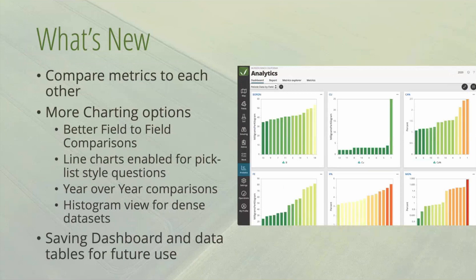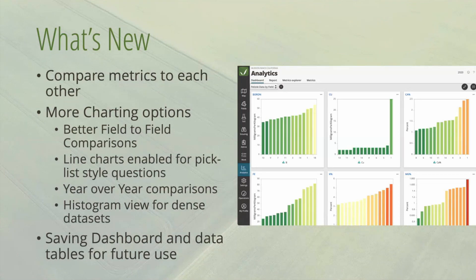So what exactly is new in FarmQA Analytics? First, we added a comparison tool so you can compare one metric to another. A metric can be whatever you configure in FarmQA as a standalone unit — nitrogen, phosphorus, potassium, a stand count, insect count, etc. This tool allows you to compare, for example, your current nitrogen levels to phosphorus, or phosphorus to yield.